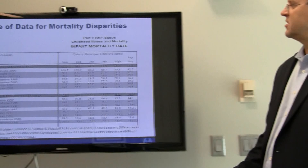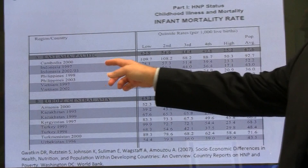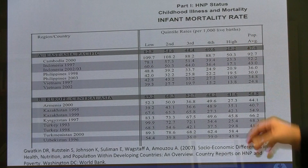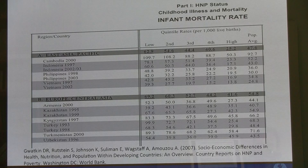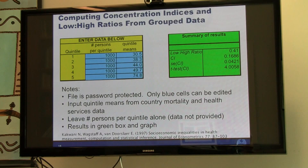Your data will look like this: you'll have, say, the infant mortality rate, with the country listed, and then the values for quintiles one through five — low, second, third, fourth, fifth — and a population average. You put these numbers into the spreadsheet, and it will calculate the concentration index for you. Similarly, you'll look at health services such as antenatal care and do the same thing.